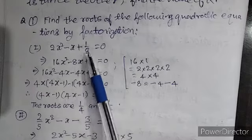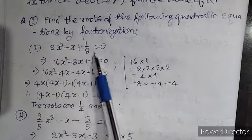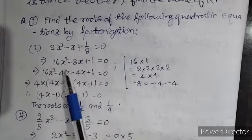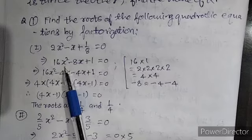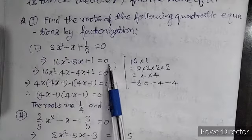Here, 1 by 8 is the last term. So, 8 should be multiplied on both sides to get 16x square minus 8x plus 1 equal to 0.